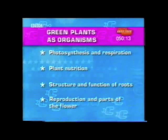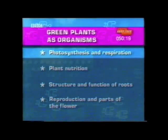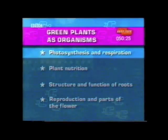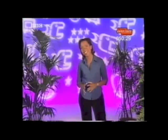This unit is going to look at some of the main characteristics of plants as living organisms. We'll start off with photosynthesis and respiration. Photosynthesis is the key process for plants that you need to know really well for your test. Photosynthesis means 'making through light', and this next clip looks at the four things plants need for photosynthesis to happen.